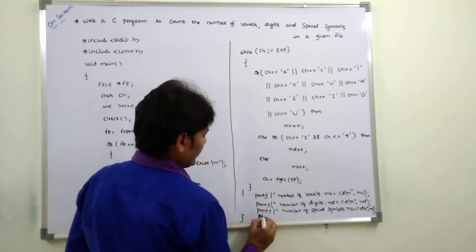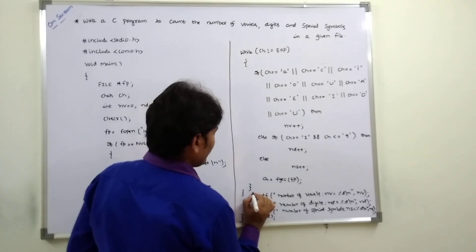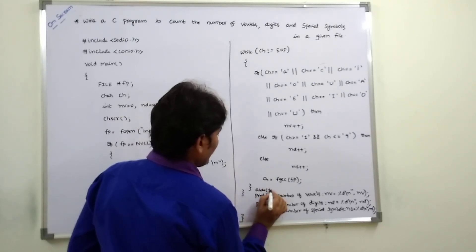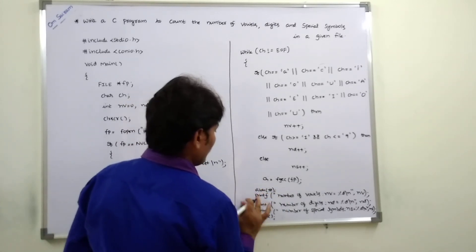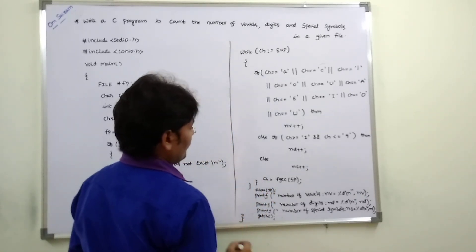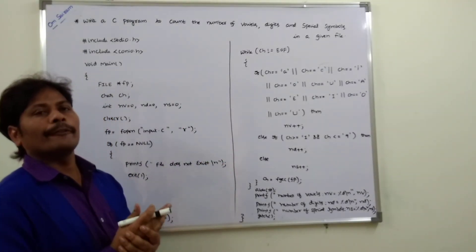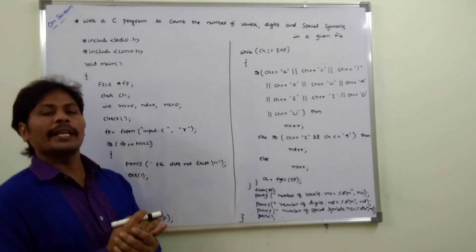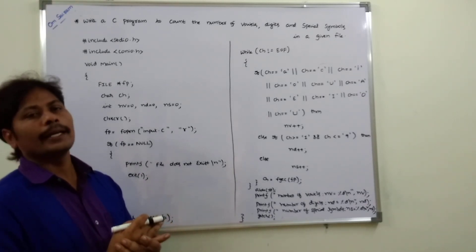Next, printf number of special symbols ns equals %d. Then ch is equal to fgetc(fp) to read the next character, and fclose(fp) to close the file. This is the program for finding how many vowels, how many digits, and how many special symbols are there in a given file.